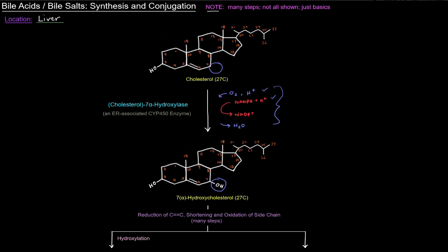The enzyme that catalyzes this reaction is a mixed function oxidase — an ER-associated CYP450 enzyme specifically called cholesterol 7-alpha hydroxylase. That name should make sense: it's acting on cholesterol at the seven position to add a hydroxyl group. The "cholesterol" part is sometimes in parentheses because it's not always indicated — sometimes it's just called 7-alpha hydroxylase. Similarly, the product is sometimes just called 7-hydroxycholesterol, since the alpha refers to stereochemistry which isn't always shown.